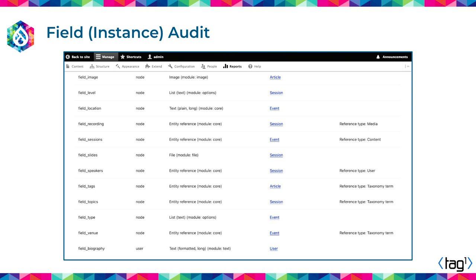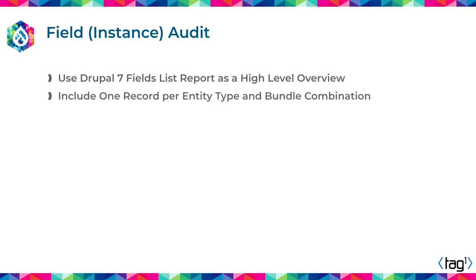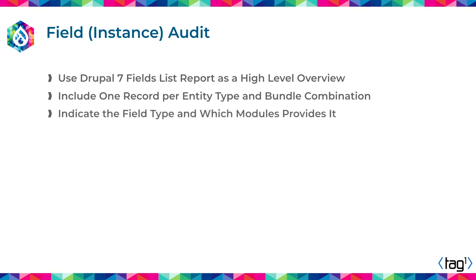With fields, in Drupal 7 there is a field list report — this is my second favorite page in the whole Drupal 7 admin. Basically, look at that page: it is going to give you a high-level overview of all the fields, all the entities, and what modules are being used to provide those fields. In one page, just take a screenshot. Make a list of every field per entity per bundle, include the field type, and take notice if it is a shared field. Something different between Drupal 7 and Drupal 10: in Drupal 7, you can have a shared field across multiple entities. In Drupal 10, that is no longer allowed.